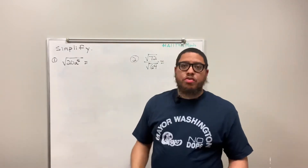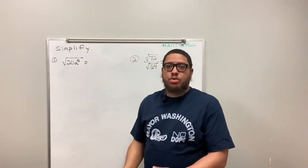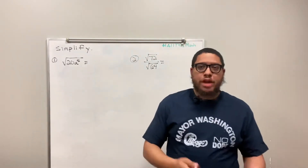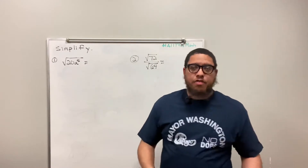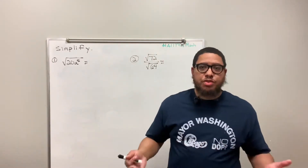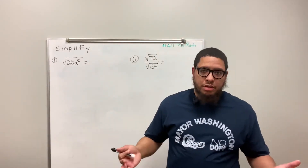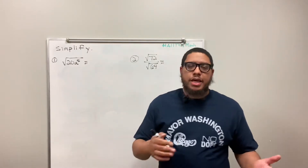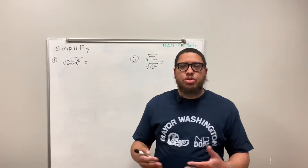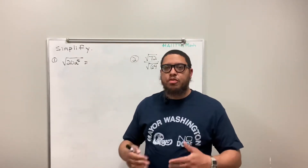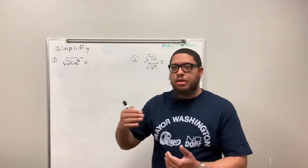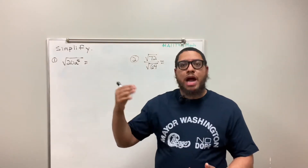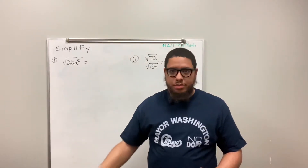You use a radical sign when you're trying to find the second root or the square root of something. You also use a radical sign if you're trying to find the third root or the fourth root or the fifth root of something. A radical sign is the symbol you use when you want to perform the inverse of raising a term to a power or using an exponent.